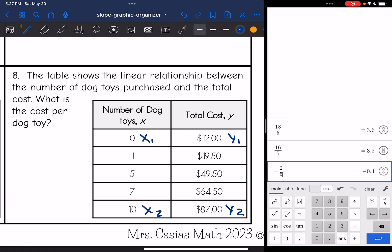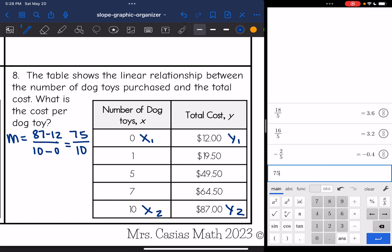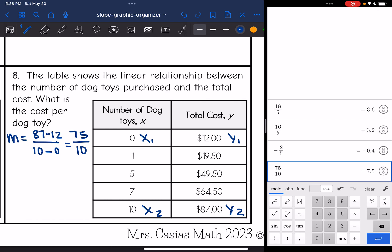So I'm going to do y2 minus y1. It'll be 87 minus 12 all over x2 minus x1. It'll be 10 minus 0. So 87 minus 12 is 75 and 10 minus 0 is 10. Now I'm going to do 75 divided by 10 and I get 7.5. So that means the cost per dog toy is $7.50. It was $7.50 per dog toy.